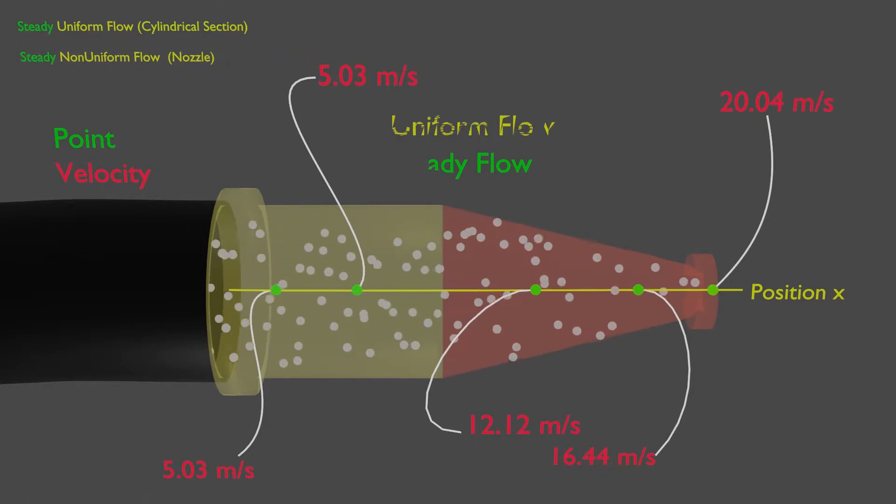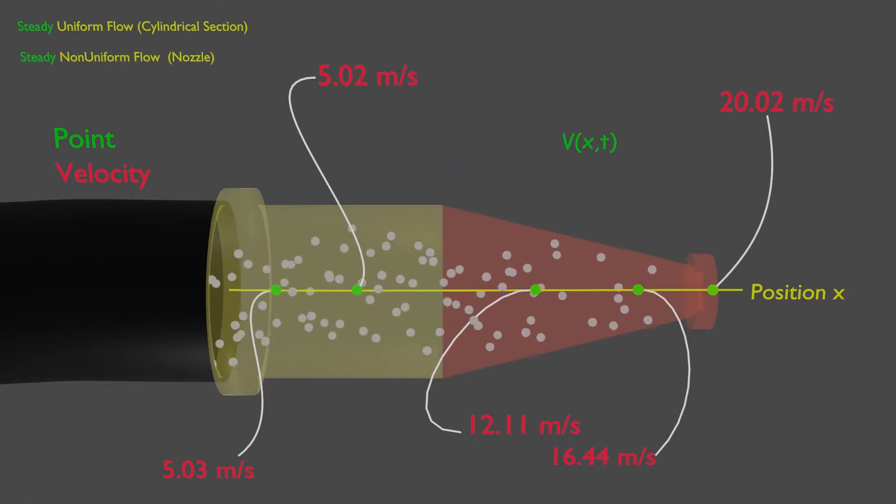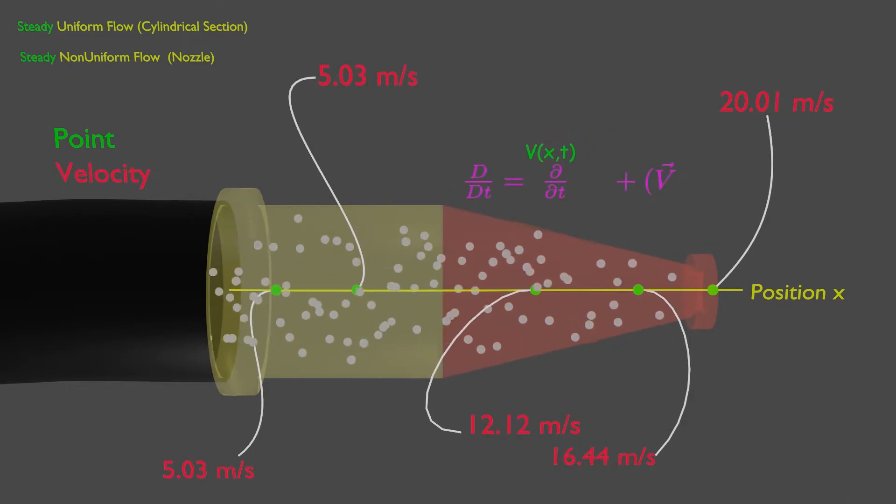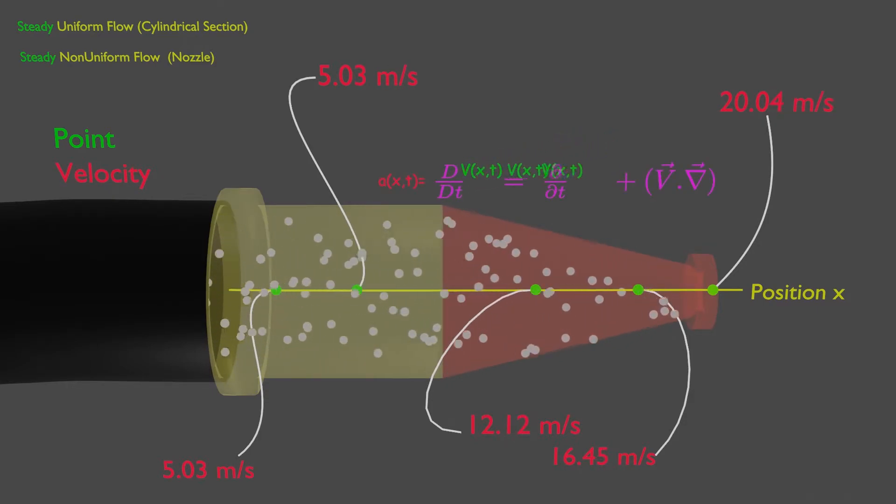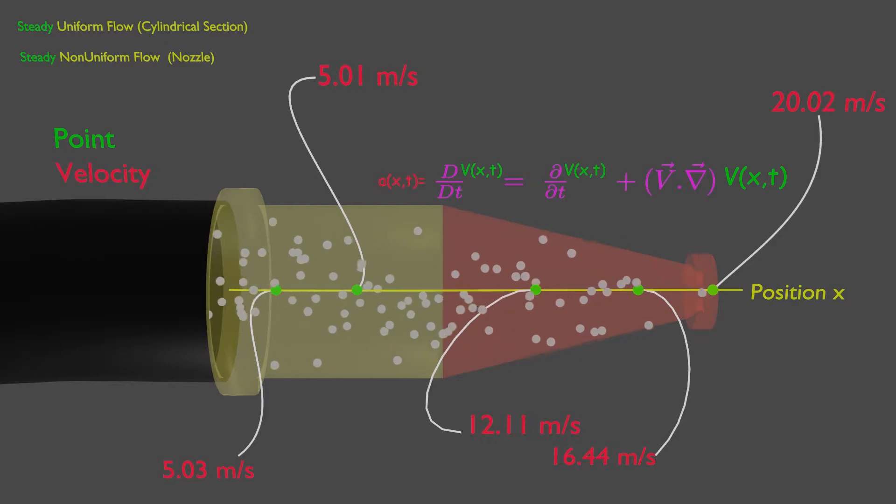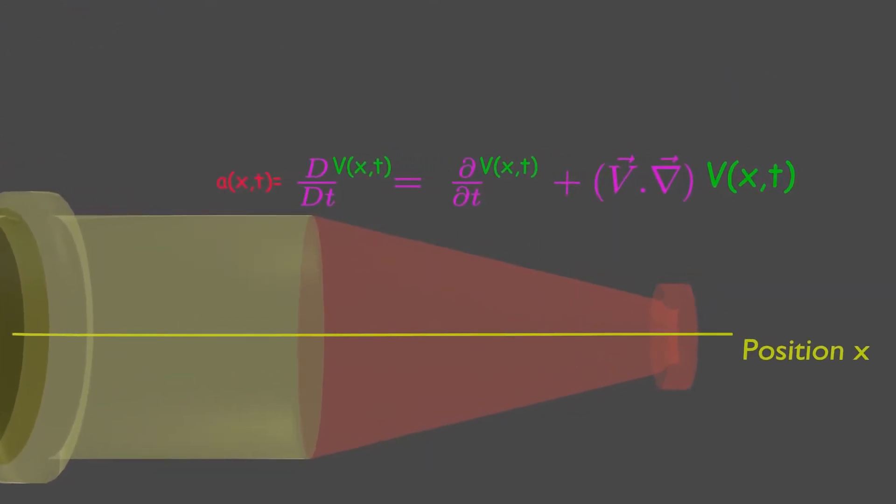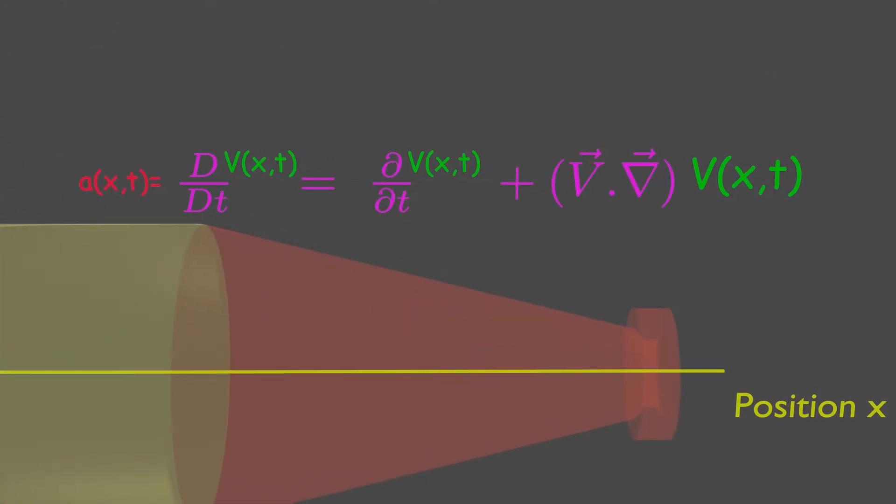Now if the velocity is a function of position and time, we can get acceleration of this nozzle using the material derivative. The first term on the right side is related with point, whereas the second term is related with location.